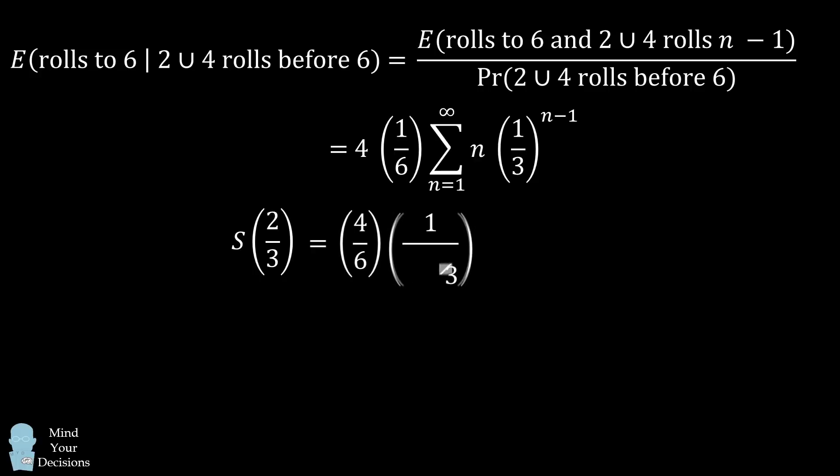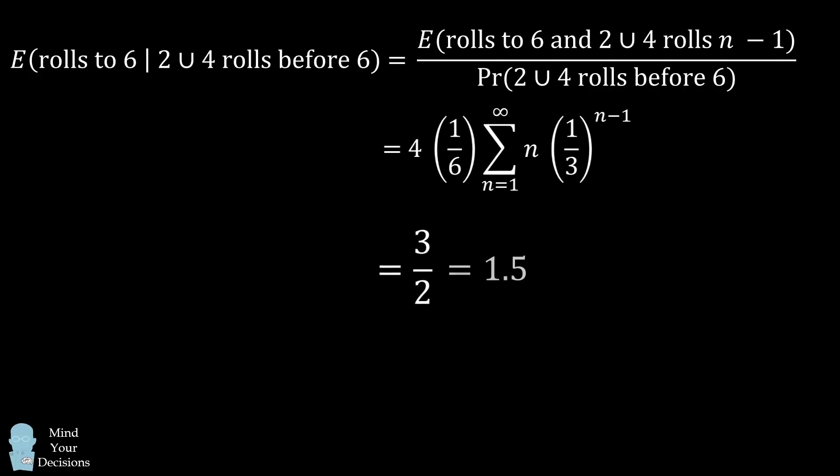We then simplify this formula and then simplify again, and then we end up with s times 2/3 is equal to 1. And now we take the reciprocal of 2/3, which ends up being 3/2. So we figured out once again that this expectation is equal to 3/2 or 1 and a half rolls.